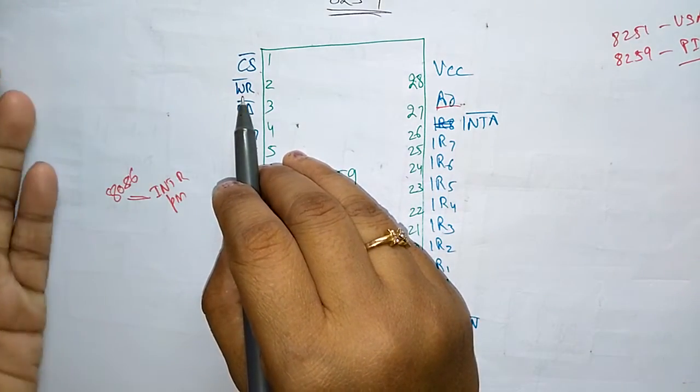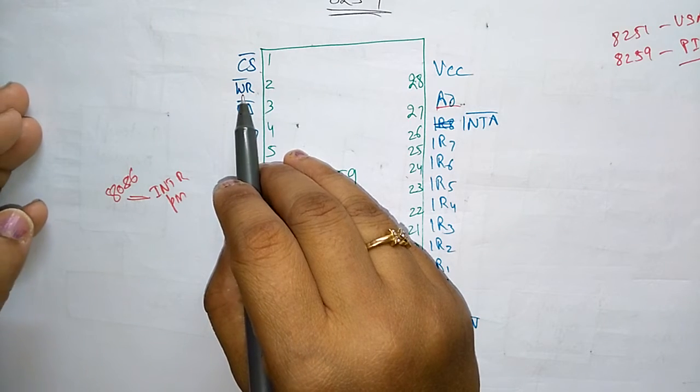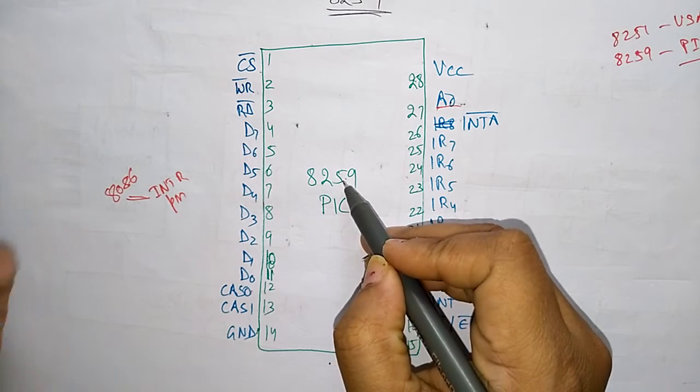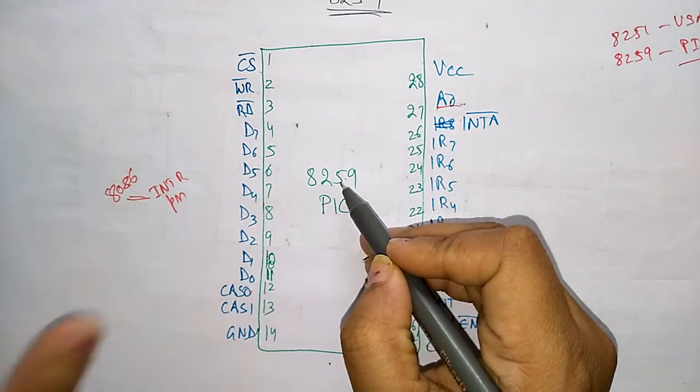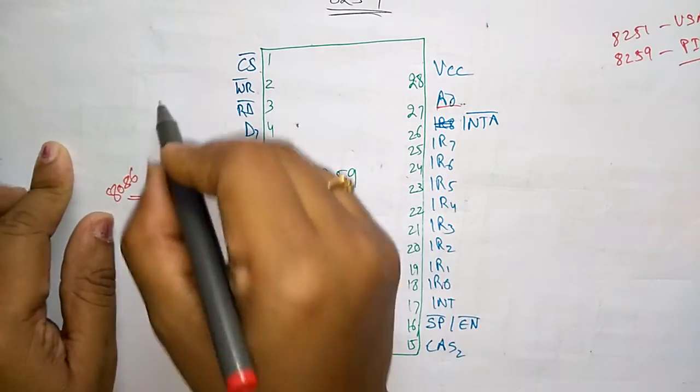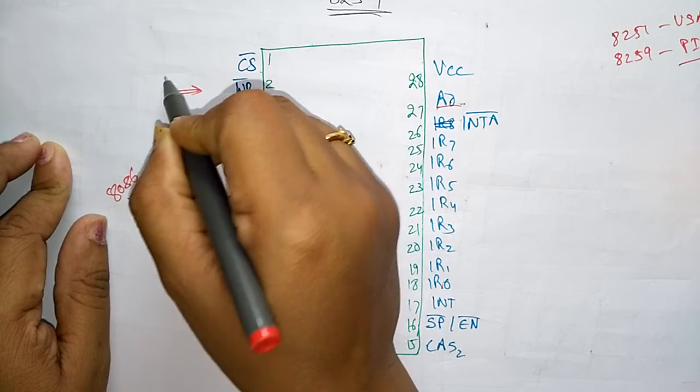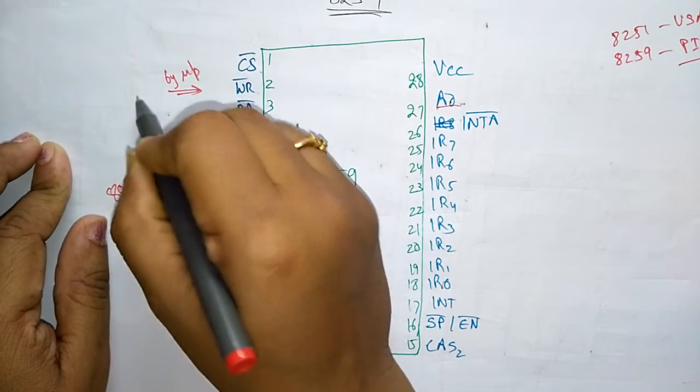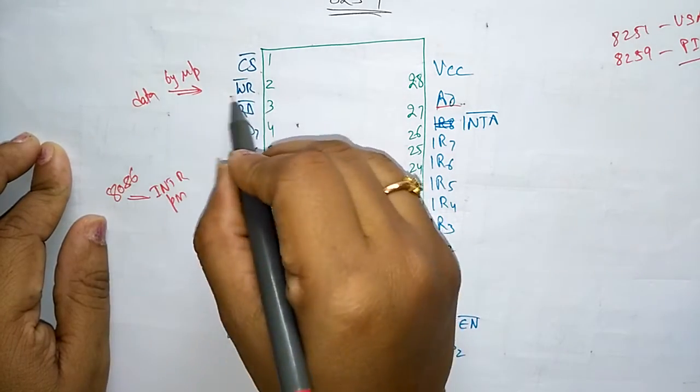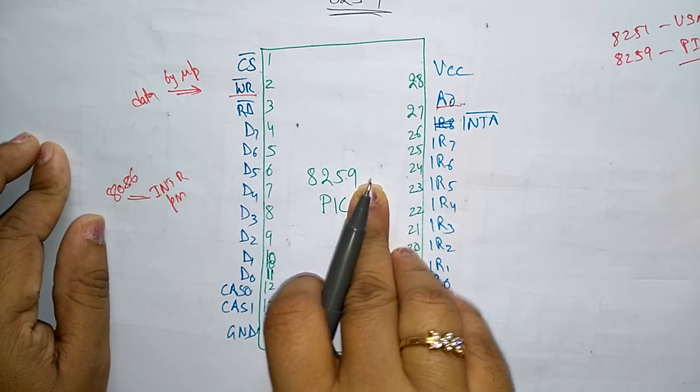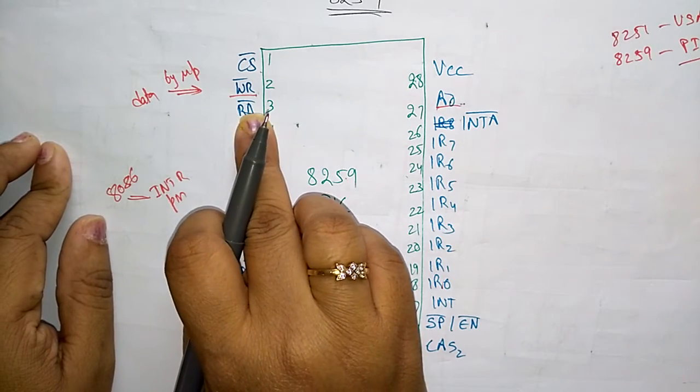When this write signal is asserted, this 8259 accepts the command or data lines sent by the microprocessor. So whatever the data that is sent by the microprocessor will be written to 8259.